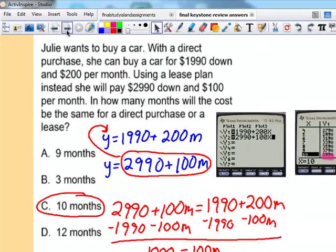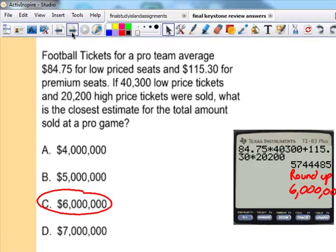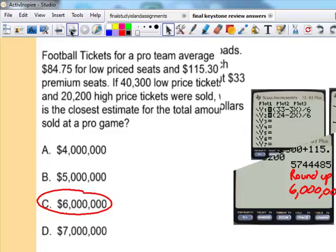This next one is just basically an estimation problem. If you have a calculator, and you will have a graphing calculator during the keystone, really no need to round until the end. You can see how I typed everything in the calculator, and the best answer is 6 million. Again, going through these pretty quickly.